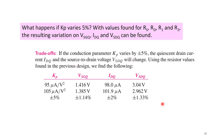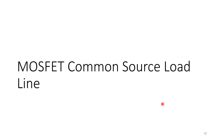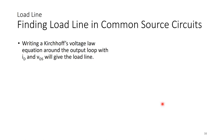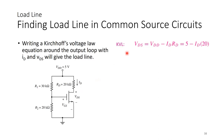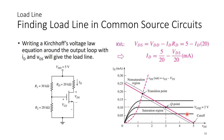Before wrapping up this analysis, let's look at the common source load line. Using Kirchhoff's voltage law around the output loop with IDS and VDS gives the load line just as in BJT. Doing KVL at the output loop: VDS equals VDD minus IDRD. This example came from the first NMOS common source circuit. I can write this in the form Y = MX + C, where the Y-axis is ID and the X-axis is VDS, and draw this load line superimposed onto the output characteristics.